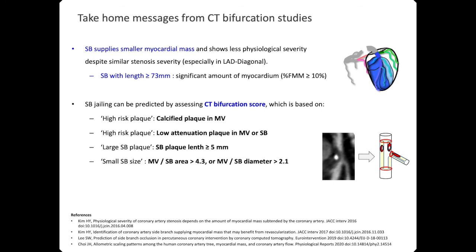Take-home messages from the CT-BIPCAN studies: the side branch supplies smaller myocardial mass and shows less physiological severity despite similar severity of stenosis, especially in LAD-diagonal bifurcations. A side branch with length of more than 73 mm means a similar amount of myocardium, so please respect it. Side-branch jailing can be predicted by assessing ugly or large amounts of bifurcation plaque represented by the CT-BIPCAN score. Thank you for your attention.